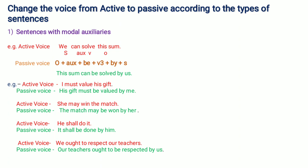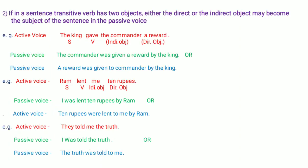We have seen sentences with modal auxiliary verbs. Now we move forward to the next type: if in a sentence, the transitive verb has two objects. Either the direct or the indirect object may become the subject of the sentence in the passive voice. First, you should know the types of objects. There are two types: direct object and indirect object.